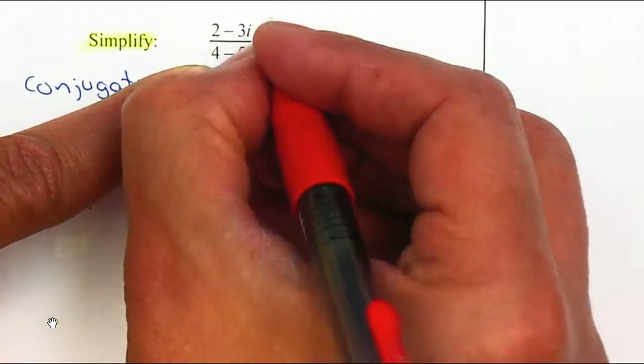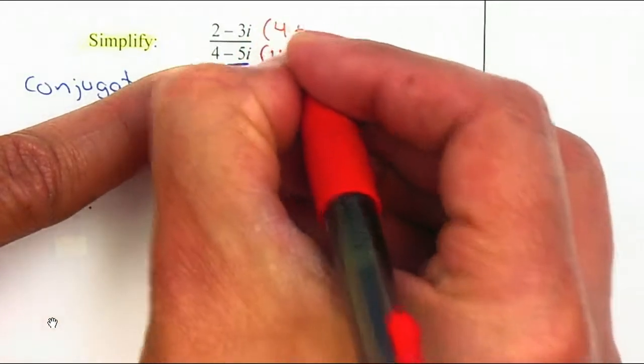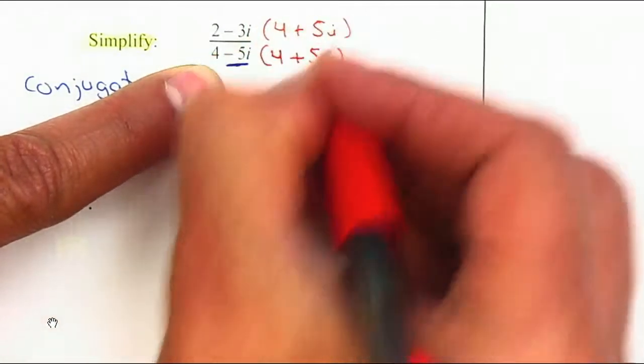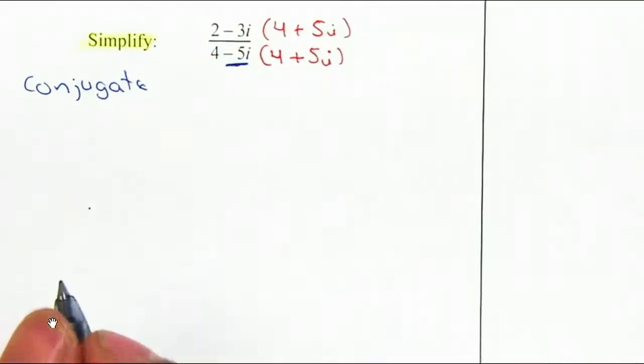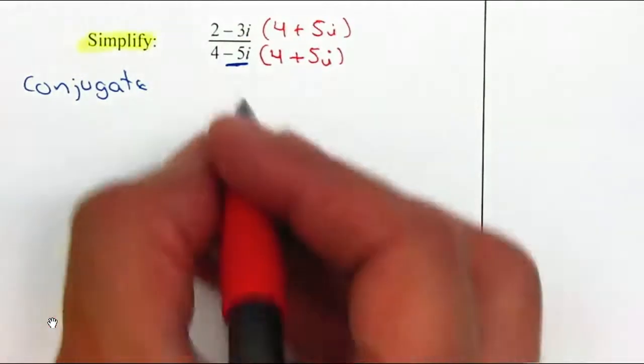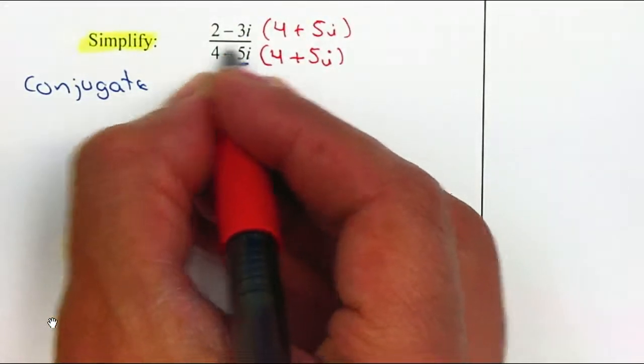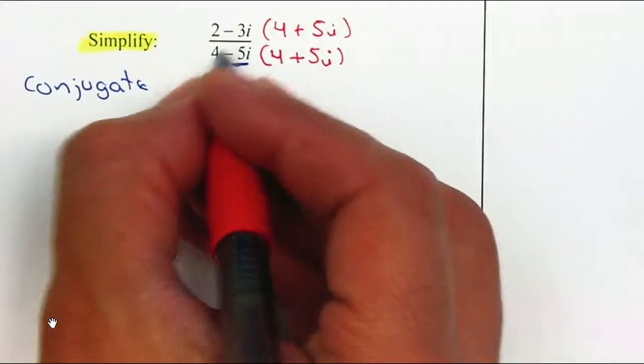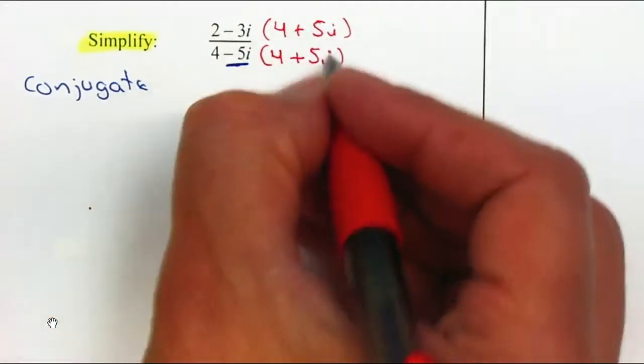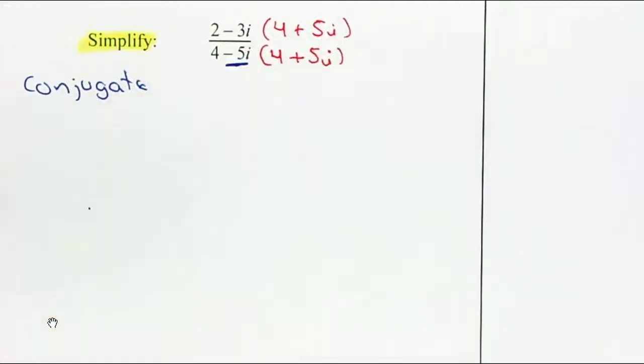What I do on the denominator, because I want the equation to be equivalent, the same value, I'm going to multiply on the numerator. So the 4 stays the same. The only thing that changes to the opposite is the imaginary part. You multiply by the same on the numerator as well.